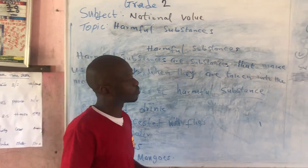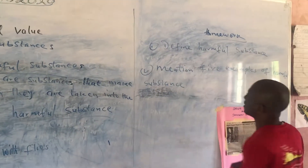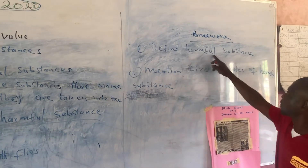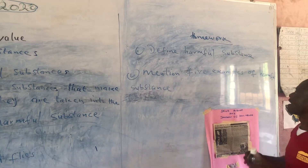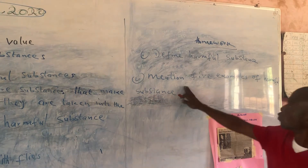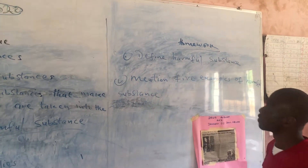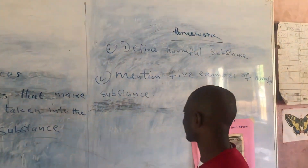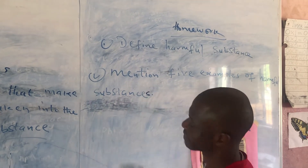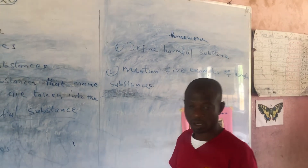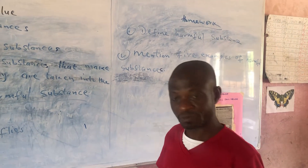Now let us go back to our homework. Our homework says: one, define harmful substances; two, mention five examples of harmful substances. Good luck — I wish you good luck. Thank you for cooperating with me.